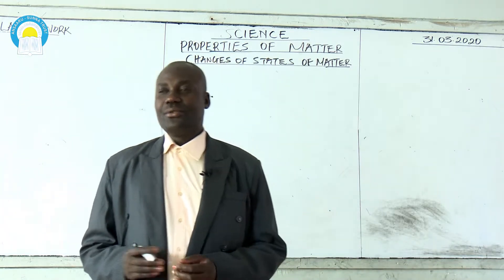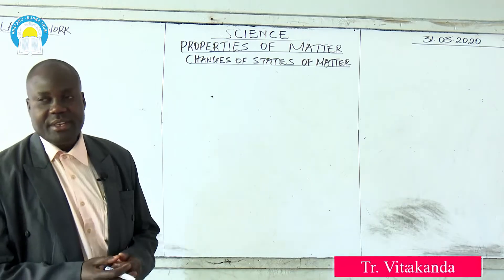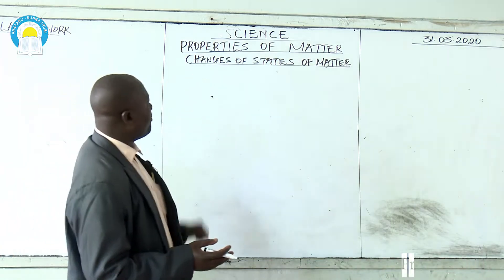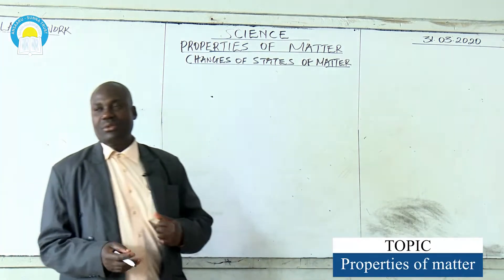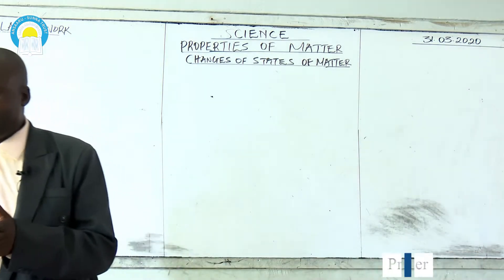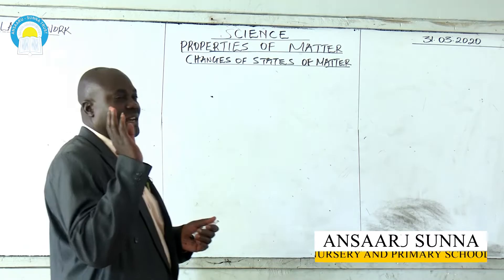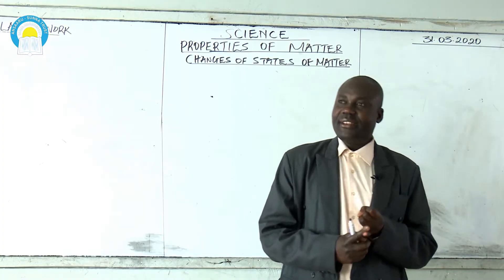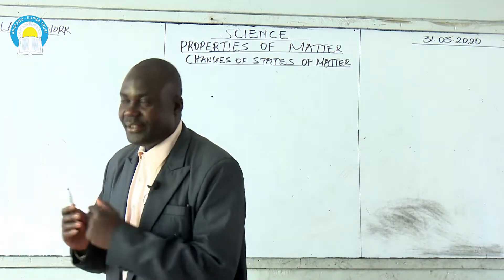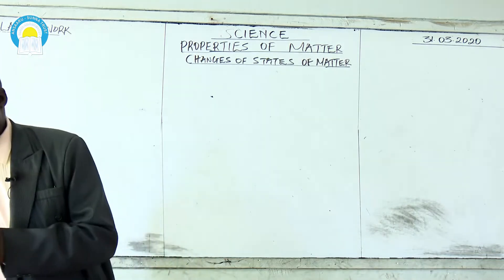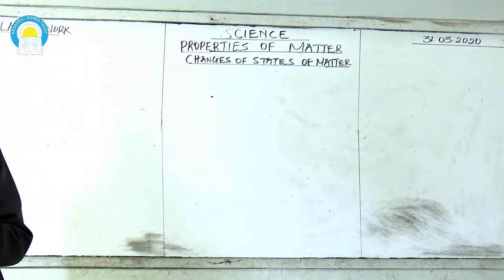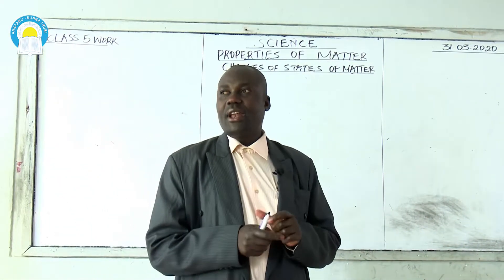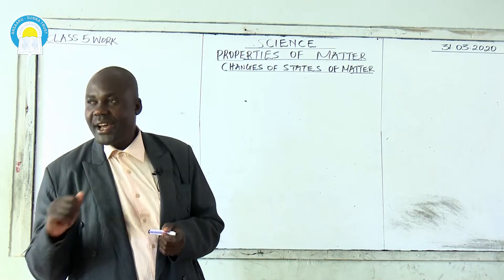Learners, today we are going to take over from what we were doing yesterday, which was about class 5 work — properties of matter. Yesterday we dealt with what we call effects of heat on matter, where we learned about two or three ways heat can make something expand. We dealt with expansion in solids, liquids, and gases, and also checked on the effect of heat on matter concerning combustion.